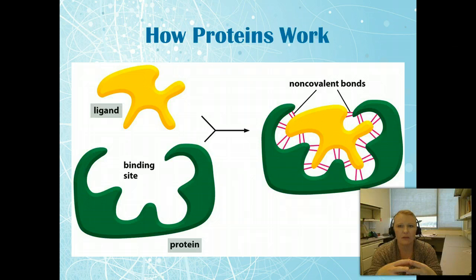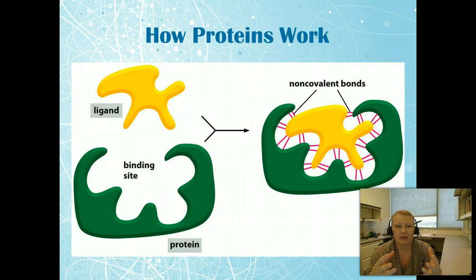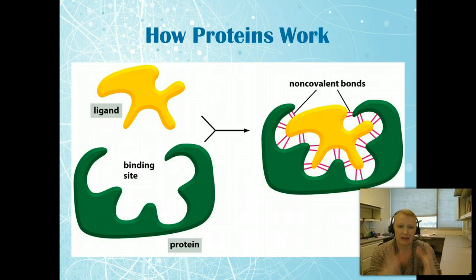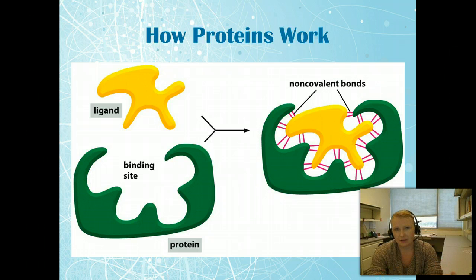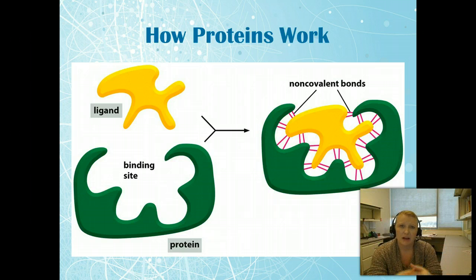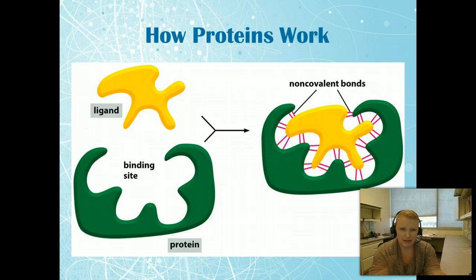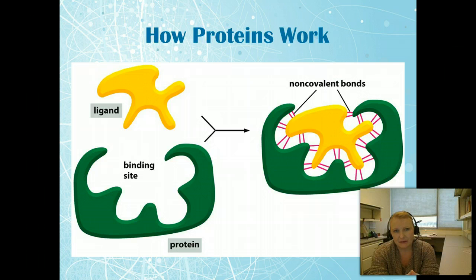At the most basic level, proteins function with a ligand and a binding pocket. This binding site is not on the surface of the protein — it's a cavity formed from the surface, so it's not a flat area but rather an in-depth area, as you can see here.